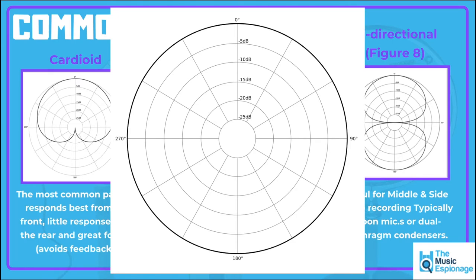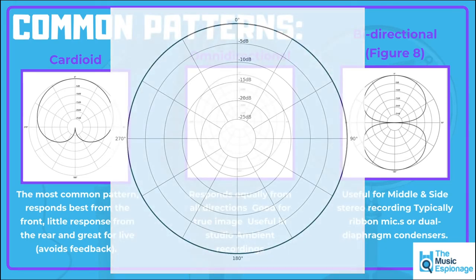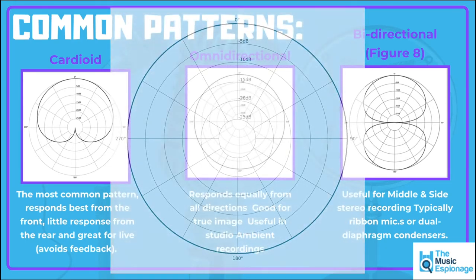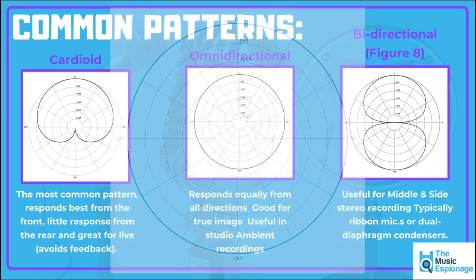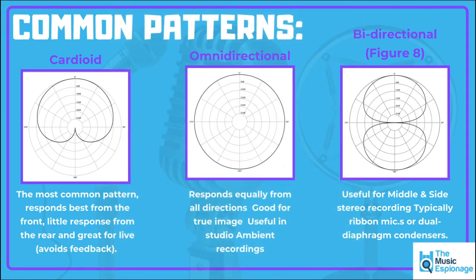Omnidirectional is also really good for picking up the sound of a drum kit within a space. You'll often close mic a drum kit — the snare, the kick drum, the hi-hat — but you also want the sound of that kit within the room. An omnidirectional polar pattern is quite a good choice for that.